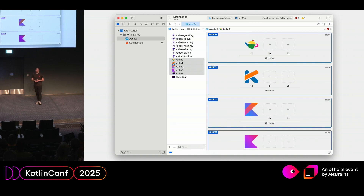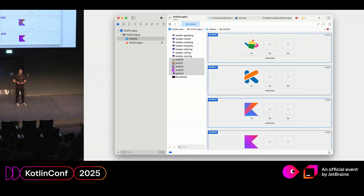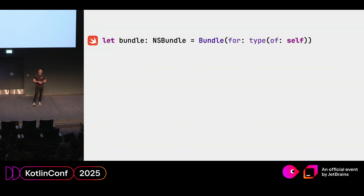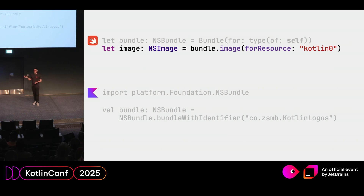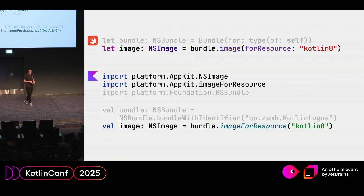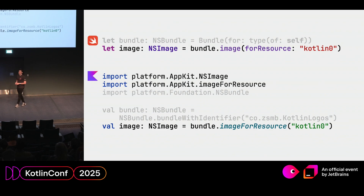To put logos on the screen and move them around, the first thing I need to do is load images from somewhere. Using the asset system in an Xcode project, you can drop images in and load them at runtime. In Swift you'd use bundle for type of self, which gives you the appropriate bundle for the current class instance. In Kotlin you can import the bundle type and use a slightly different NSBundle function to get the same bundle. Then image for resource with the image name as a string gives you the NS image — and all of these imports are available by default when targeting macOS with Kotlin native.